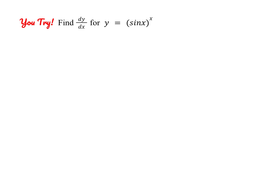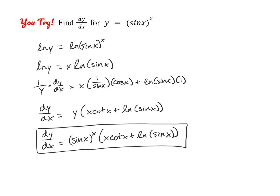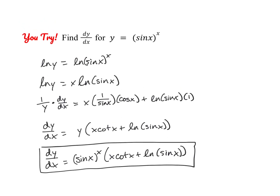I have one for you to try on your own, so go ahead and pause the video and hit play when you're ready to check. Always start these problems by taking the natural log of both sides, then do implicit differentiation. Be careful on the right side — you need the product rule, and you need the chain rule for the first term, plus the second times the derivative of the first, which is just 1. Then solve for dy/dx and substitute y with sine(x) to the power of x so the derivative is fully in terms of x.